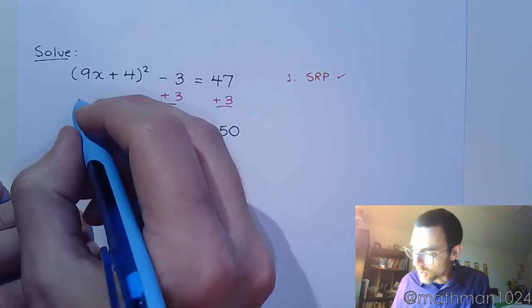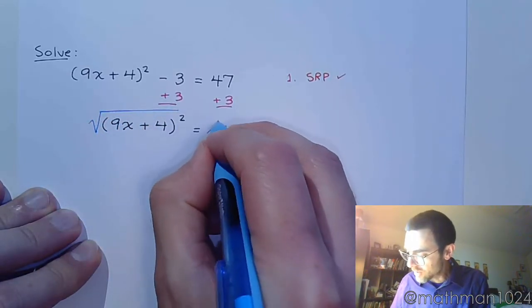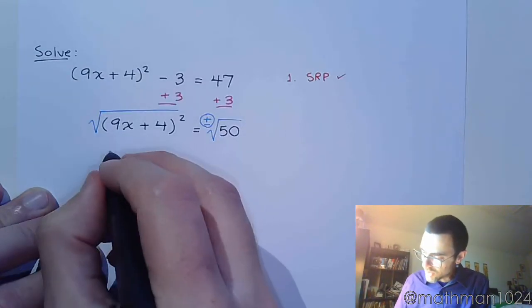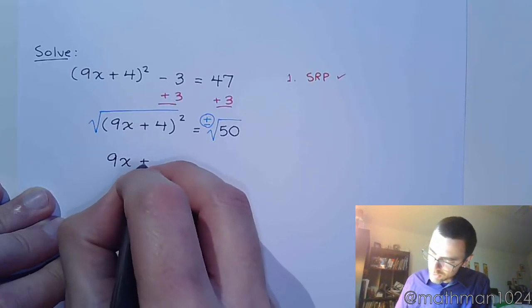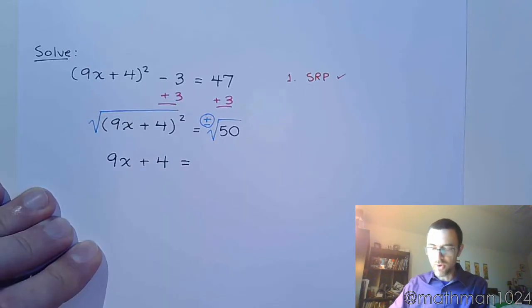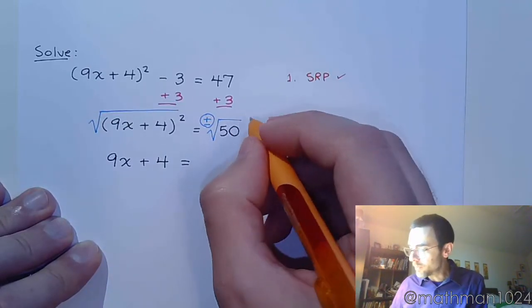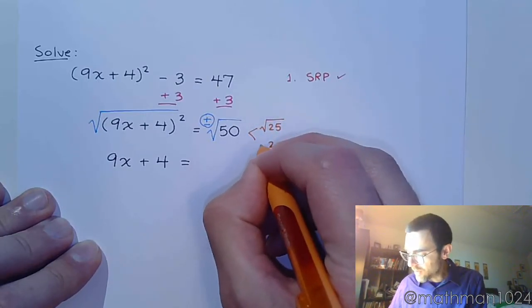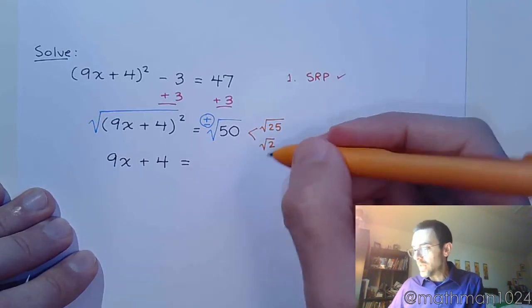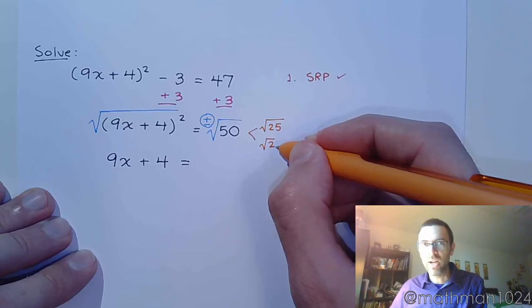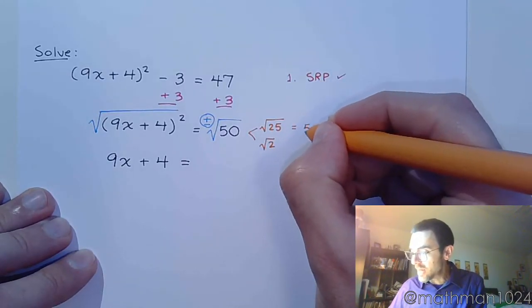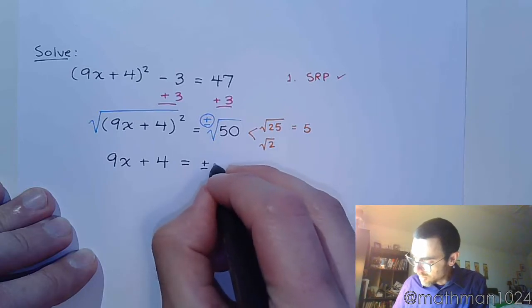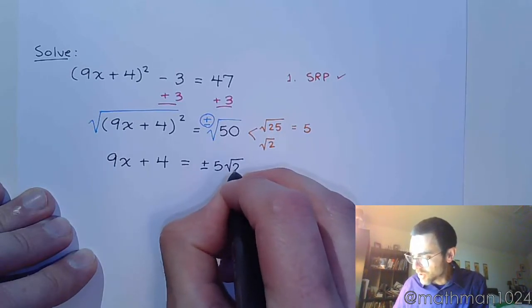And now that we have the square by itself, this is where you get to use that square root property. So, let's take the square root of both sides, remembering plus or minus. On the left side, this just gives me 9x plus 4. On the right side, we need to break down that 50, break down that radical. 50 breaks down as 25 times 2. Each factor is its own little square root. Can you take the square root of 2? Not very nicely. But, you can take the square root of 25, and that's just 5.